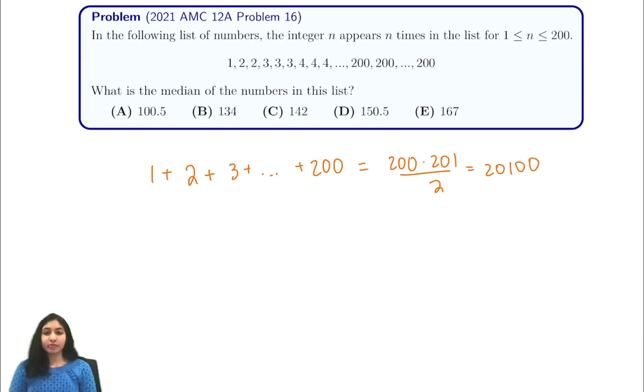And we want to find the median. Our median occurs around the 10,050th number. So we want to try and approximate what number this will be. In this problem, our answer choices are really helpful because of how far apart they are. So you can just use your answer choices to try and figure out a ballpark of where our answer should be.